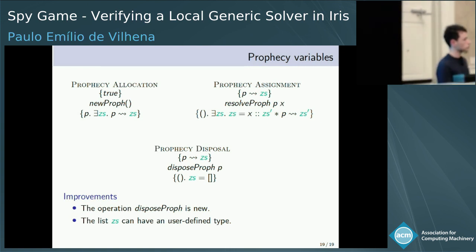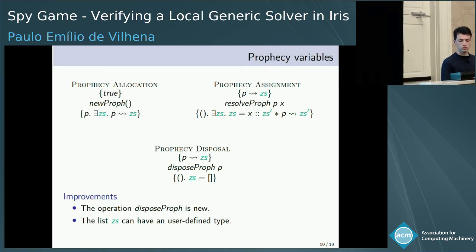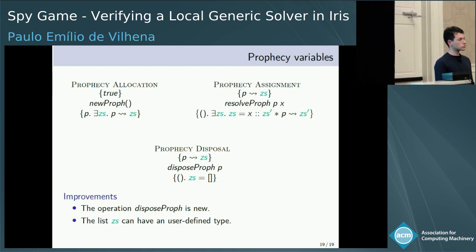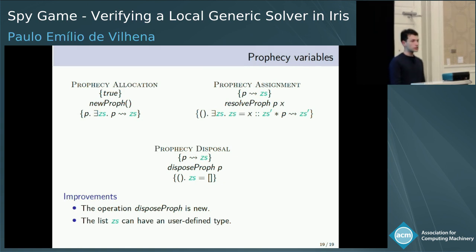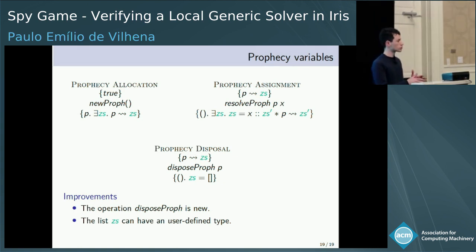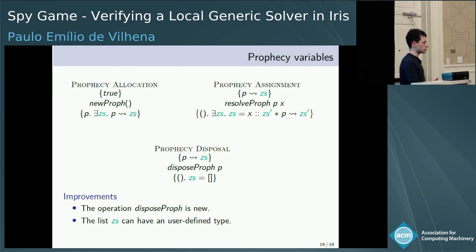You mentioned that your limitations are not proving deadlock freedom and not proving termination. Are there plans to look into that? There is a variant of the usual Hoare triple in Iris which guarantees total correctness, so that would be a possibility.